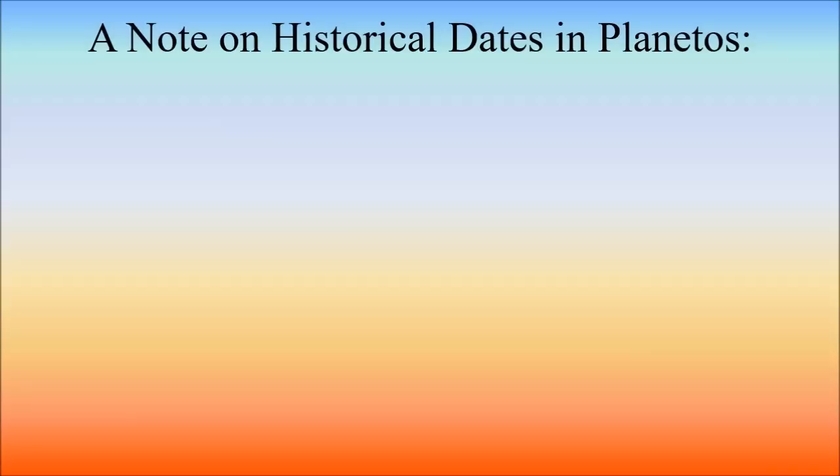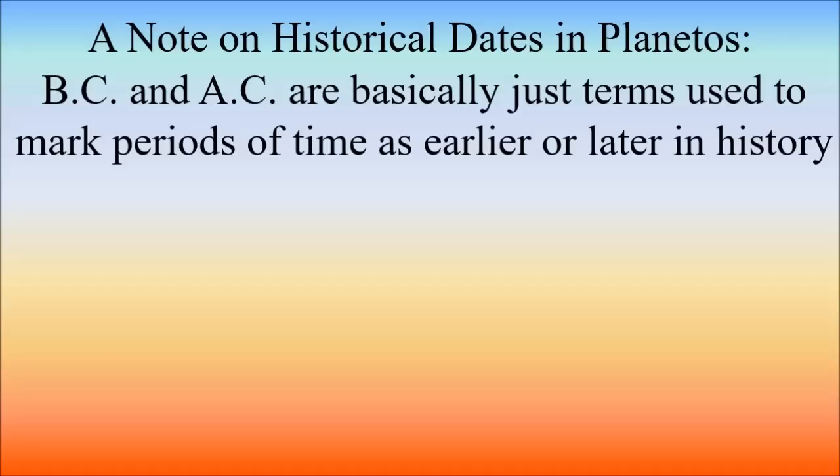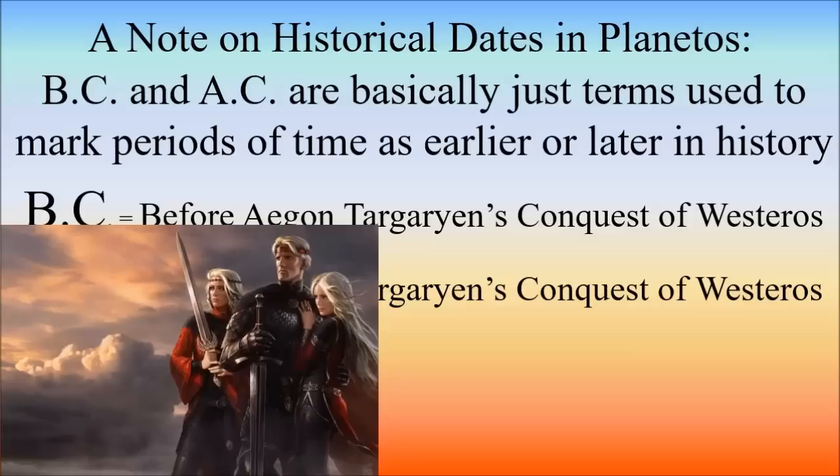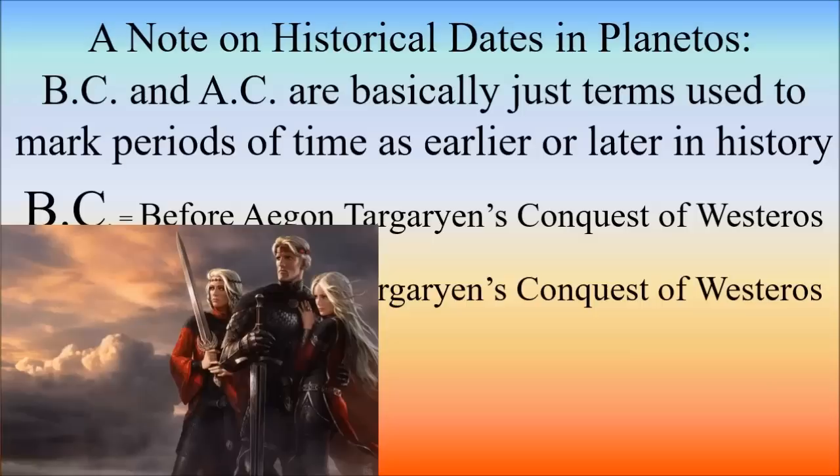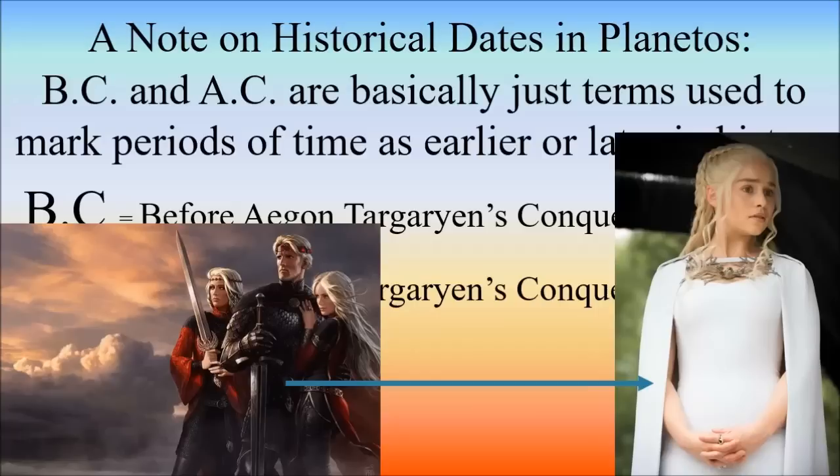For those of you who don't read the books, when I tell you a date on the timeline and use the terms BC and AC, that might confuse you. BC and AC are just like when we say BCE and CE in our real world. BC means Before Conquest and AC means After Conquest — and the conquest refers to when the Targaryens came to Westeros. The Targaryens are Daenerys's ancestors, so year zero is roughly when her ancestors took over the Seven Kingdoms.